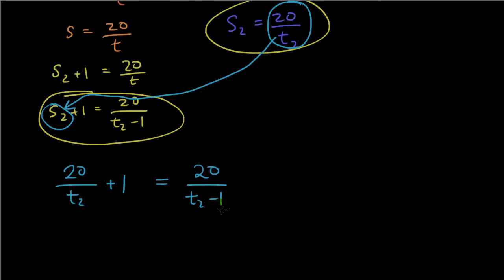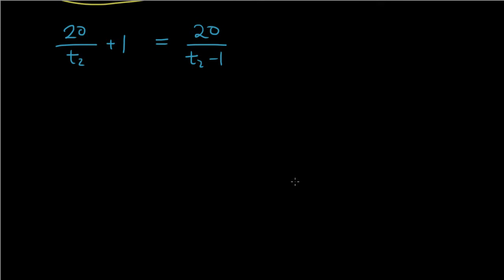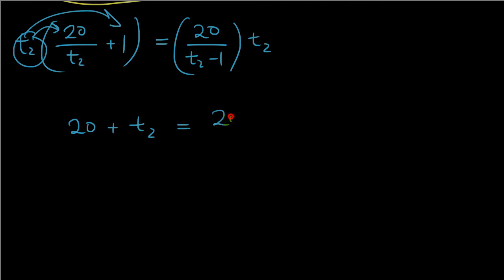Let's multiply both sides by T2. If I multiply both sides by T2, then what I'll get is T2 times 20 over T2 will get rid of the T2. So I have 20 plus T2 times one will be T2 equals 20 T2 over T2 minus one.